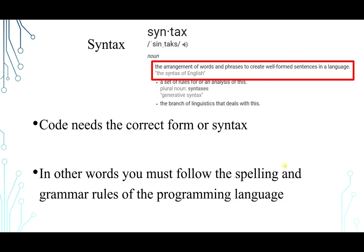So we have something called syntax. Syntax in English means the arrangement of words and phrases to create well-formed sentences in a language. So our code needs the correct form or syntax. In other words, you must follow the spelling and the grammar rules of the programming language. So the syntax is how you form your sentences in a programming language and what rules you have to follow.